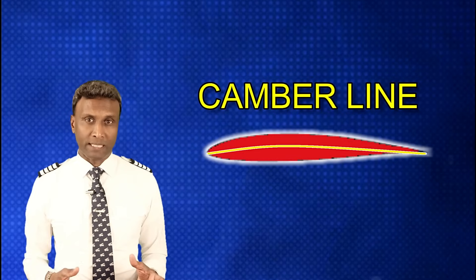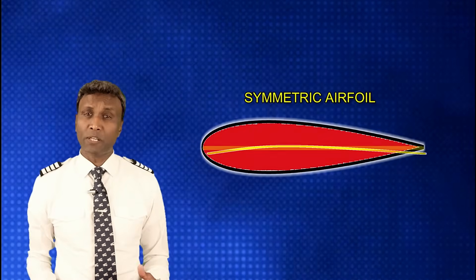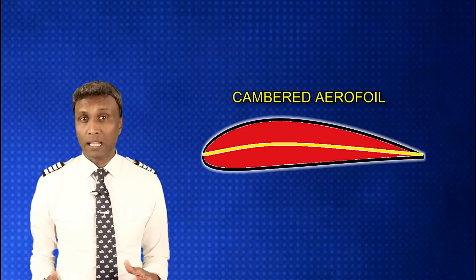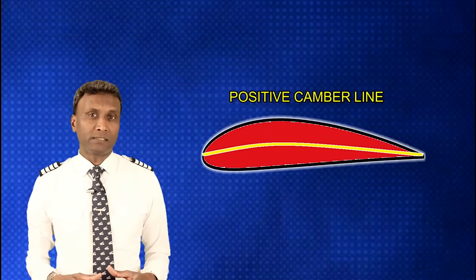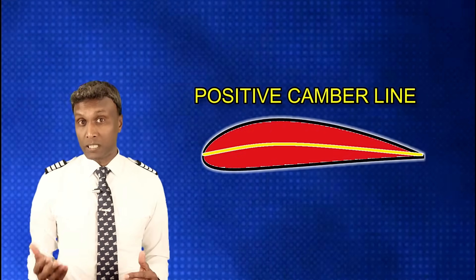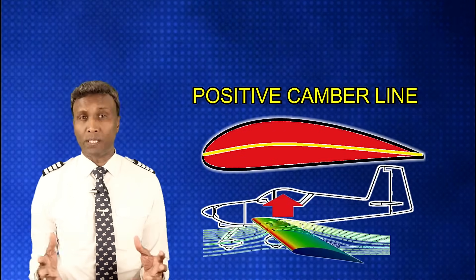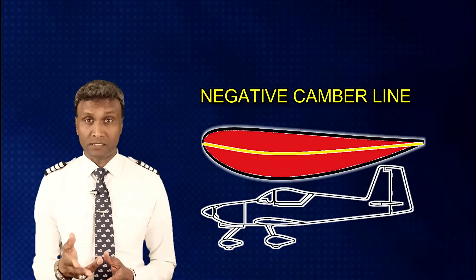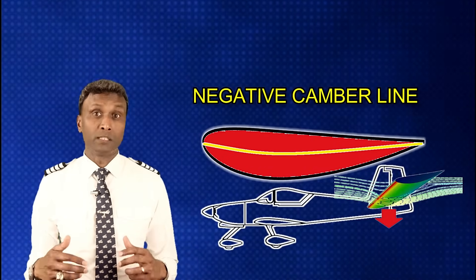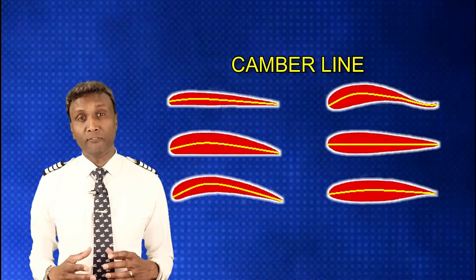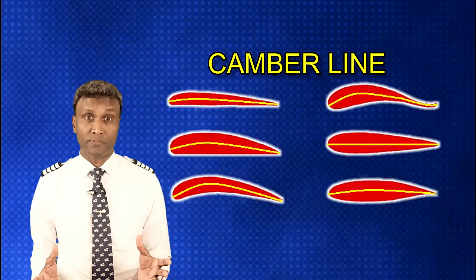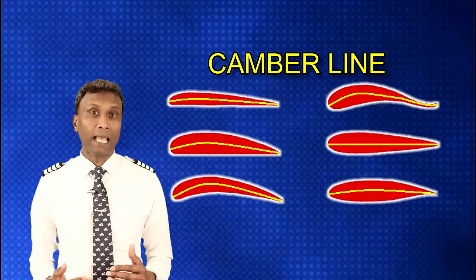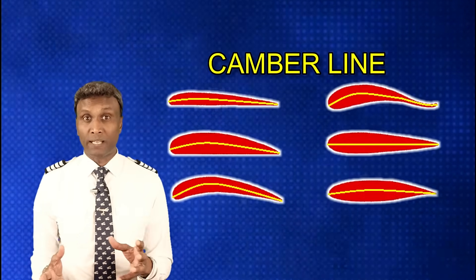The camber line is crucial in aerodynamics, influencing how air flows over the wing. A symmetric aerofoil has a camber line that is a straight line with no curvature, while a cambered aerofoil has a curved camber line. A positive camber line indicates that the upper surface has more curvature than the lower surface, as in most aircraft wings. A negative camber means the lower surface is more curved, as in the horizontal stabilizer, producing downward lift to balance the aircraft. The shape and degree of camber affects lift, drag and other aerodynamic characteristics of the wing.